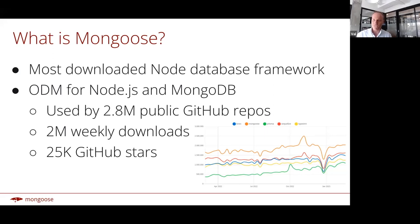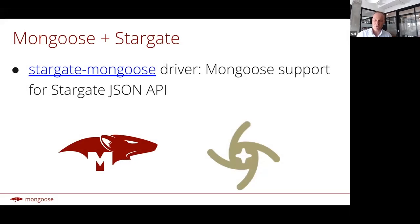Here's a little graph showing Mongoose's download numbers relative to some other similar tools in the Node.js space. So it's a lot of talk about a MongoDB project for a Cassandra conference, right? Well, it turns out we're going to be introducing Cassandra support for Mongoose via the Stargate JSON API.